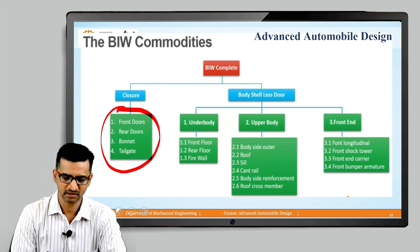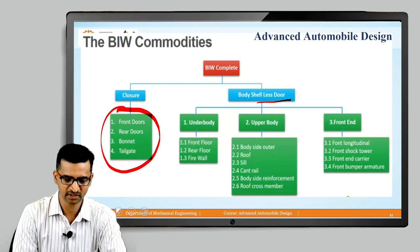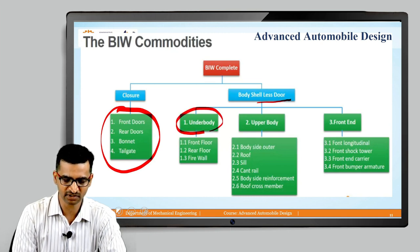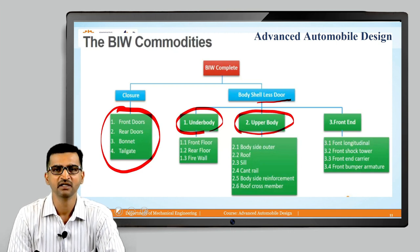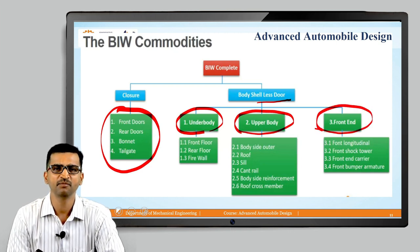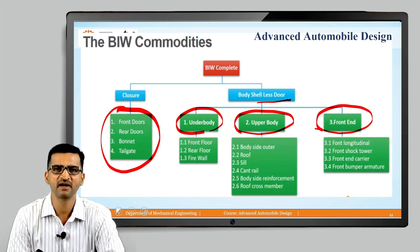Under body shell less door, obviously there is the underbody structure, then there is upper body structure, and there is front end structure. Basically, if we keep closures aside, the entire BIW is divided into underbody, upper body, and front end.